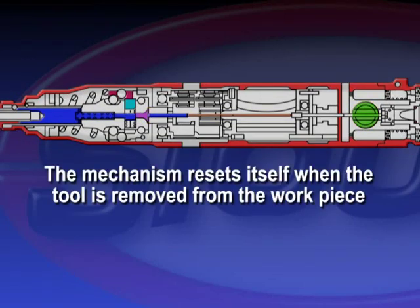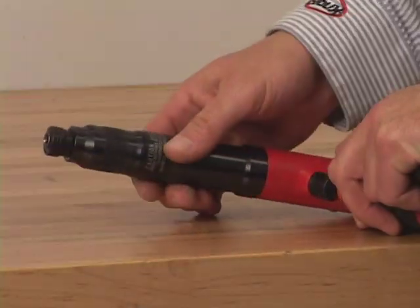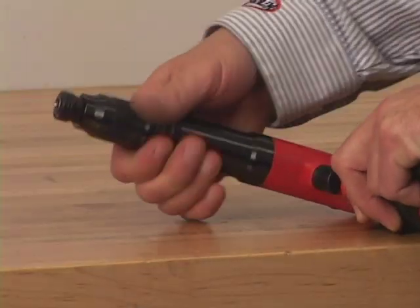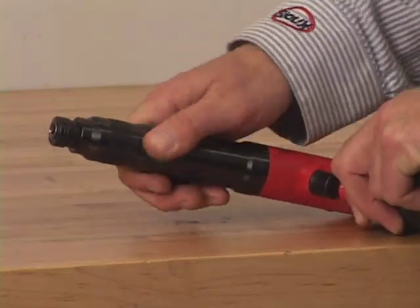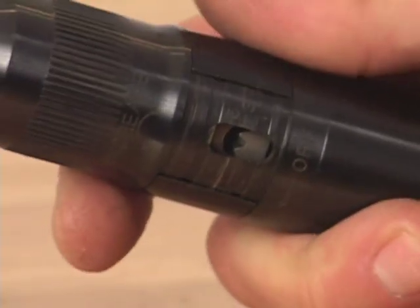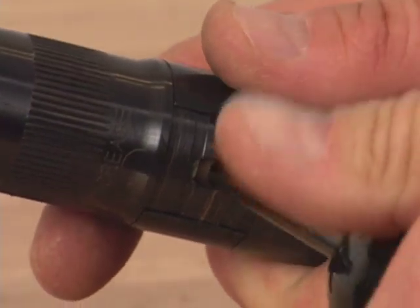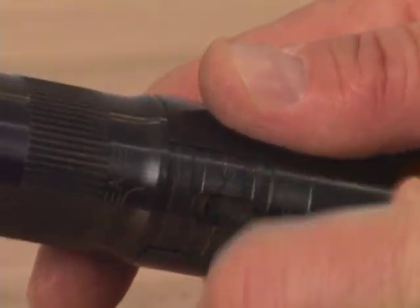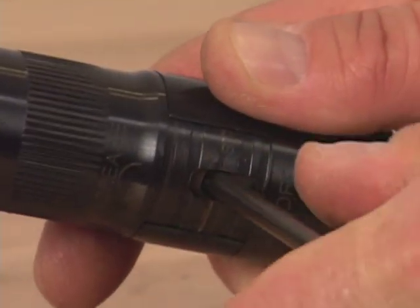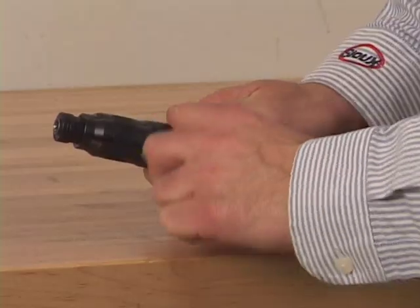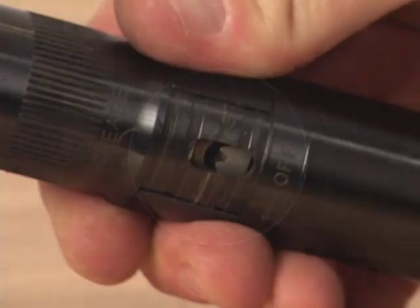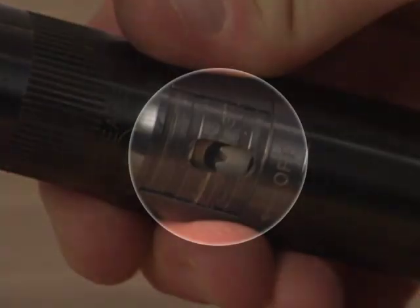The mechanism resets itself when the tool is removed from the workpiece. The torque level can be adjusted by increasing or decreasing the amount of spring load on the clutch cams. Adjustment is accomplished by turning the tool's adjustment nut, accessible through an opening in the clutch housing.